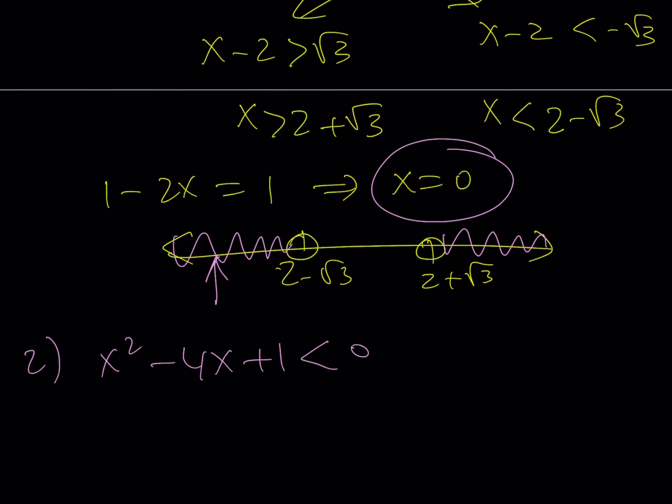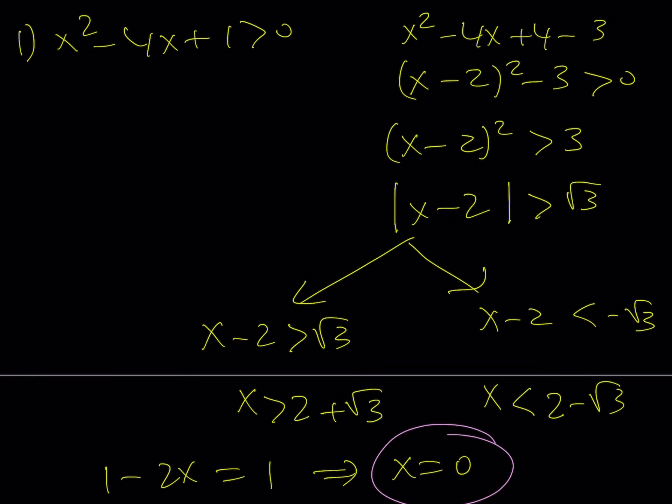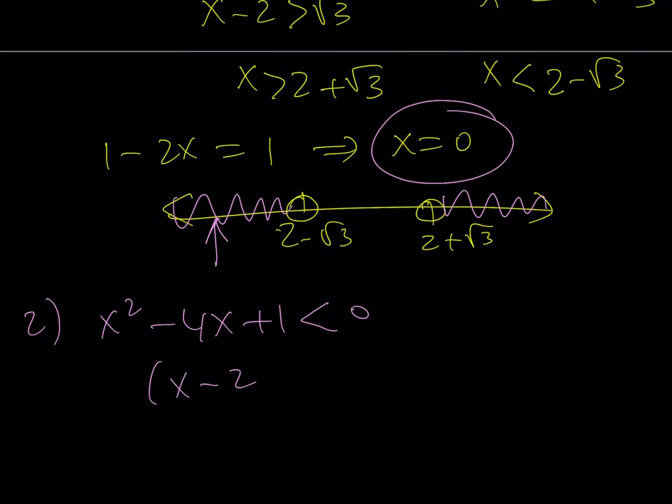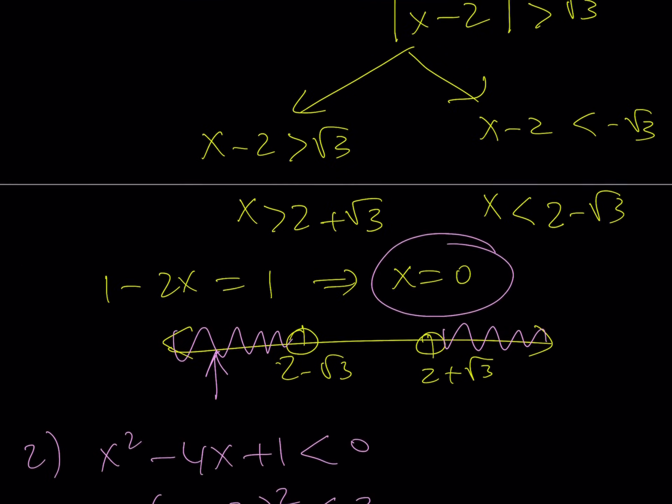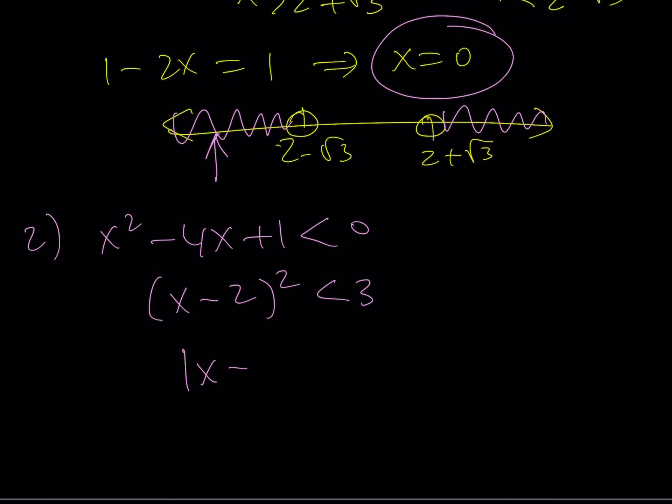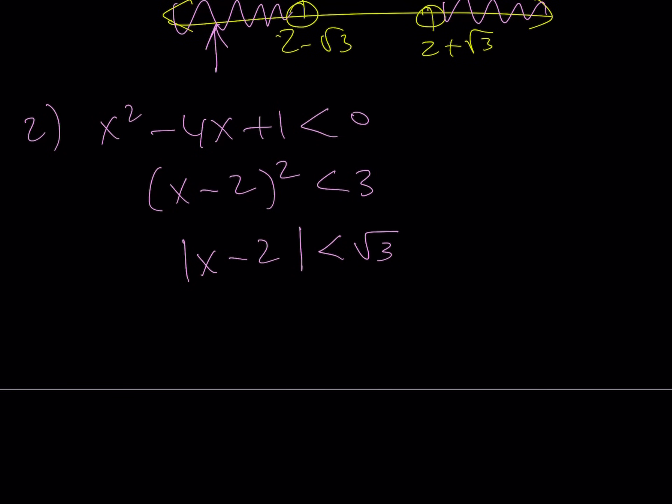But this time, we're going to set it less than 0, which means that the x minus 2 quantity squared is going to be less than 3. Now, this inequality can be solved with absolute value again, but this time, you kind of have to squeeze it between two numbers, because it's less than. So, I can safely say that the solutions are going to look like this, and then adding 2 to everything, x must be between 2 minus root 3 and 2 plus root 3.